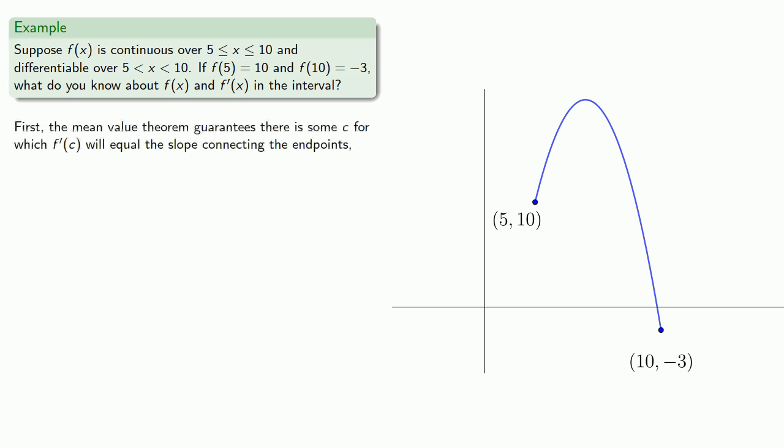And so the mean value theorem guarantees there is some c for which the derivative at c is equal to the slope of the straight line connecting the end points. And that slope will be...